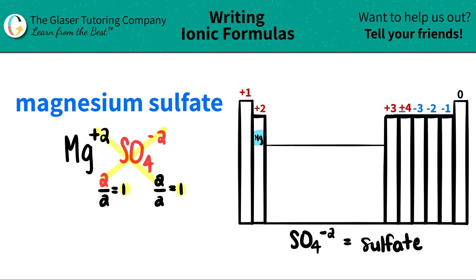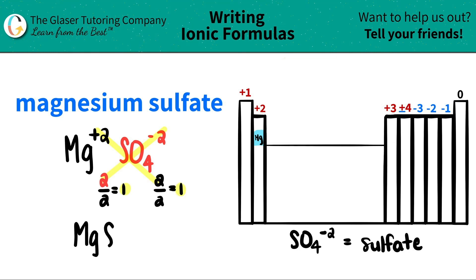Now I'm ready to write my formula. So I got magnesium — Mg. I only have one of them, so I don't have to write the 1. And the same thing goes for the polyatomic sulfate. I only need one of them, so I don't have to write the 1 and I don't need parentheses. So I could just write SO4. And now I'm done. Magnesium sulfate is just MgSO4.